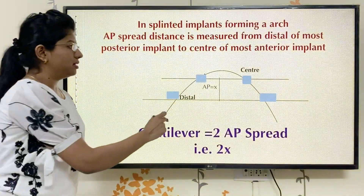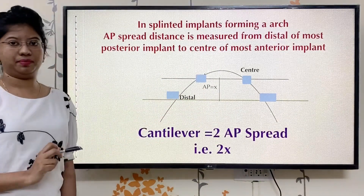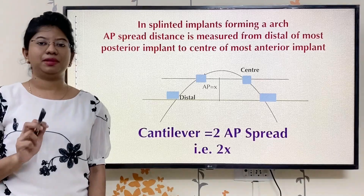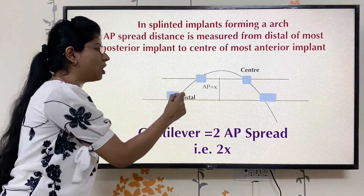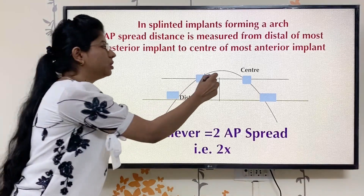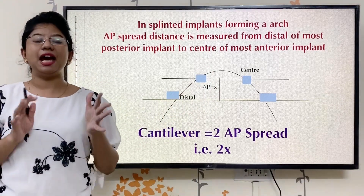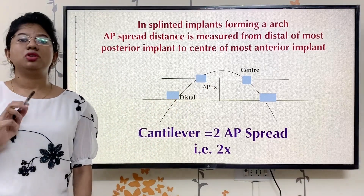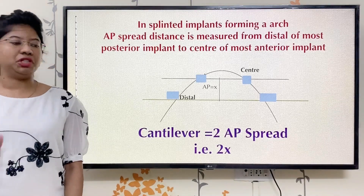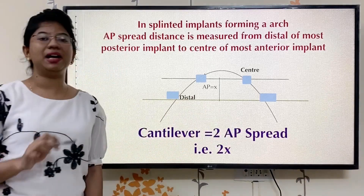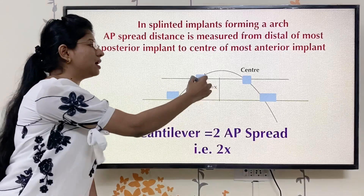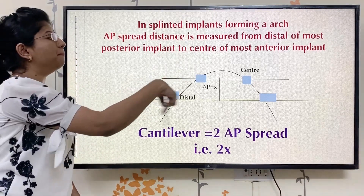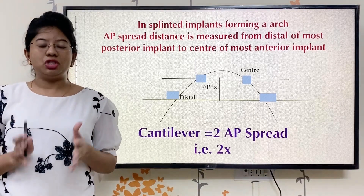This is our arch. These are the implants. AP spread is when you draw a line from the center of the most anterior implant and draw another line from the distal of the most posterior implant. The distance between both these lines is considered as anteroposterior distance or AP distance. Consider that distance as X. According to the literature, cantilever is 2 times the AP spread, that is 2 times X. If X is about 3 mm, you can give 2 into 3, that is 6 mm. So this is an important rule for placing implants or giving cantilever.